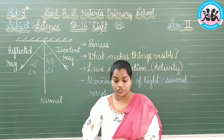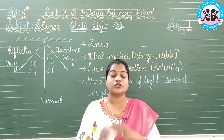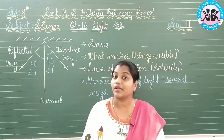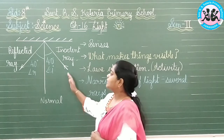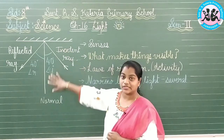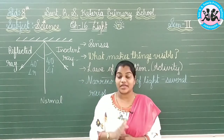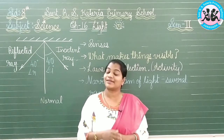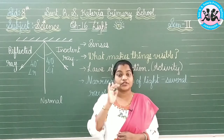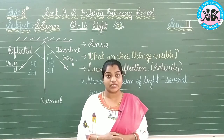Now we have another activity. In this activity, light will fall on a mirror and reflect from it, and we will observe this in a plane. What is a plane? As we have drawn — the incident ray, the normal, the reflected ray, and the mirror — all on one surface. This surface is known as one plane. Whenever light falls on a mirror and is reflected back, it forms one plane because everything is in a single layer.